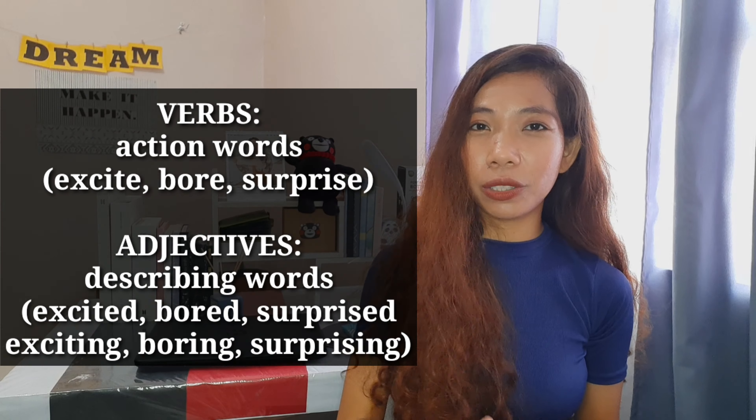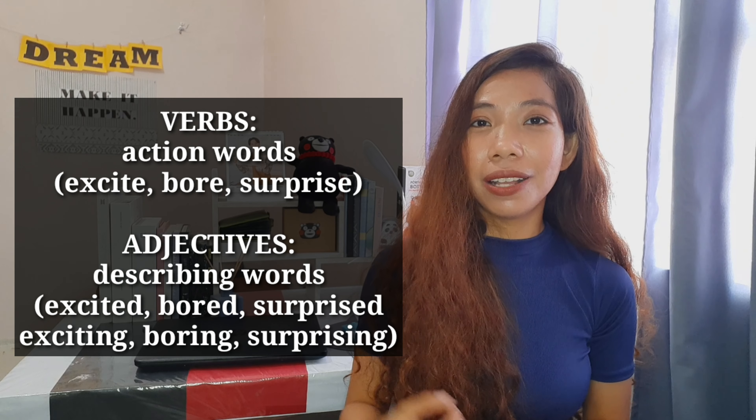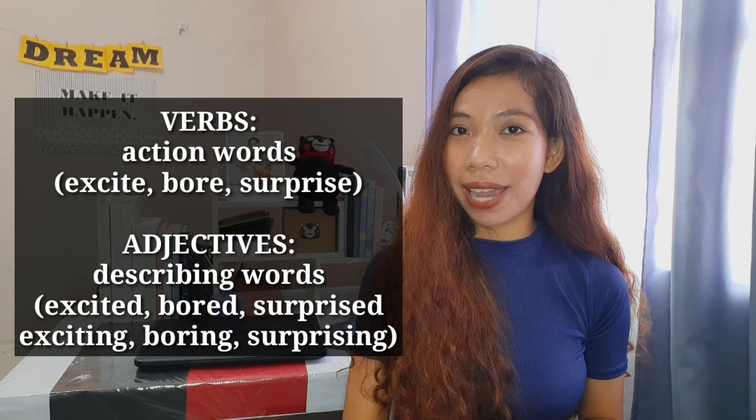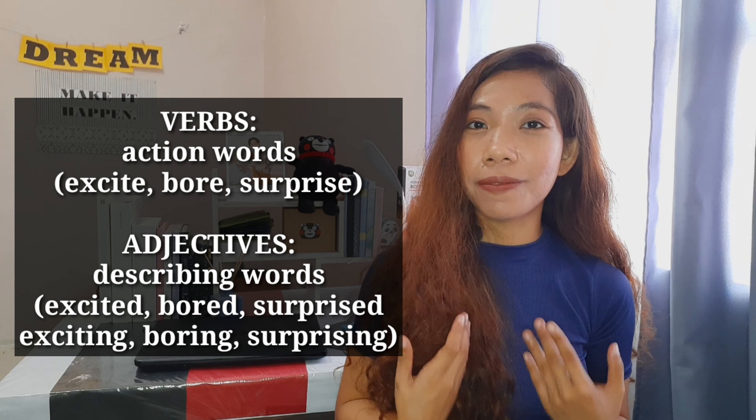You have to remember that verbs are action words. At least the verbs we're talking about in this lesson are all action verbs. Adjectives are describing words. So in 'I felt embarrassed,' I used the word embarrassed to describe what I felt at that moment. What we're going to do first is: I'll give the verb, then you attach the -ed and -ing suffixes, and then we'll have example sentences.